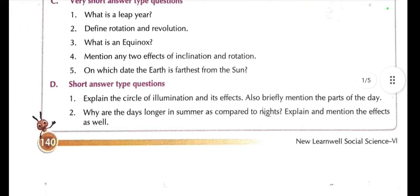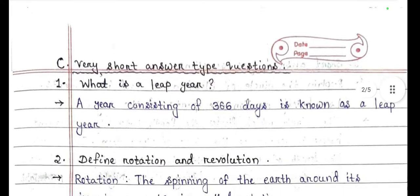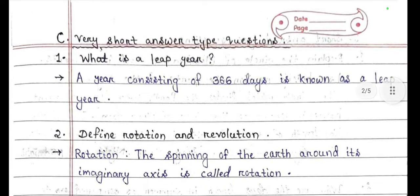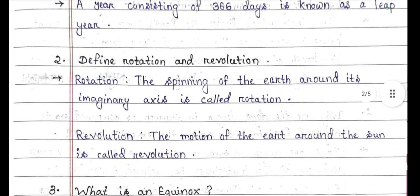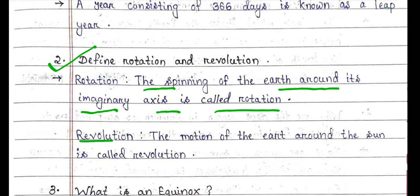Now come to the question answer section. This will be written in your copy — you can pause this video and write in your copy. What is a leap year? A year consisting of 366 days is known as a leap year. Define rotation and revolution: the spinning of the Earth around its imaginary axis is called rotation; the motion of the Earth around the Sun is called revolution.